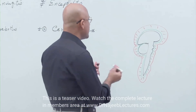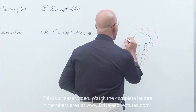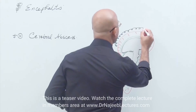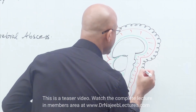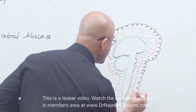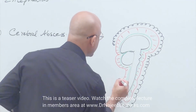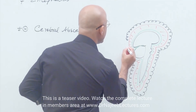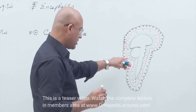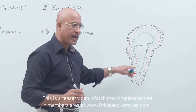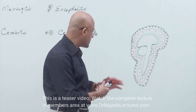Outside the leptomeninges, there is a very thick membrane called the durameter. 'Dura' means tough, so this is a very tough membrane. Note that this diagram is not anatomically correct — it is just a functional diagram for understanding purposes.